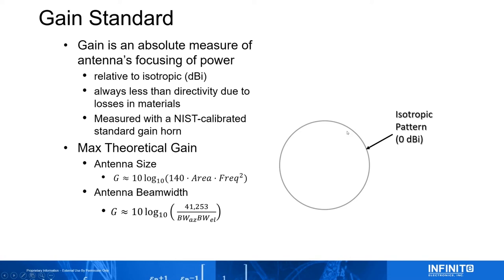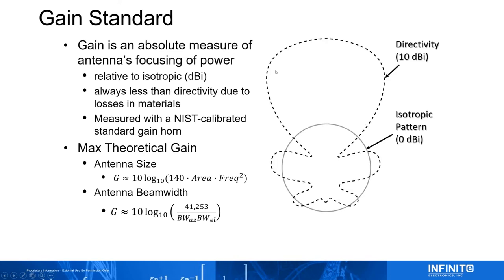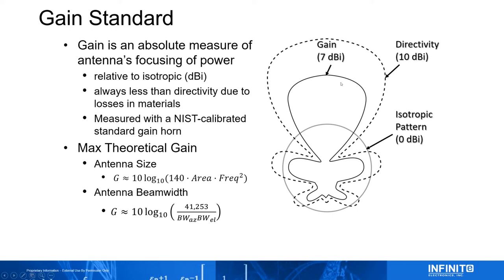Gain is always an absolute measure of an antenna's ability to focus power and receive that power — always relative to isotropic. Isotropic means a point source that radiates equally in all directions, which isn't practical. Every device that radiates has some directivity. Directivity is gain without loss. Once you factor in loss — say a horn with 10 dB directivity and 50% efficiency — the gain drops by 3 dB, so gain is always less than directivity.